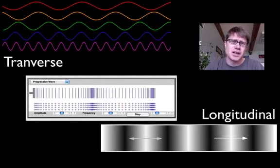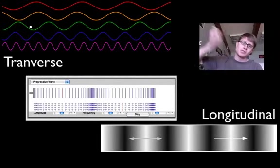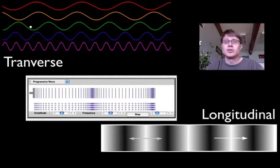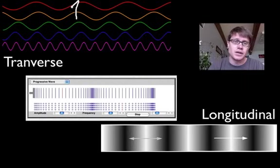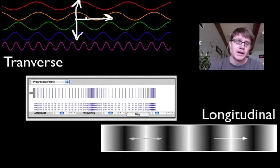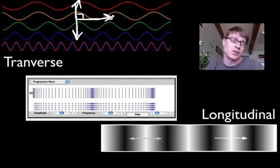First of all, you should understand that waves come in two different flavors. There's transverse waves and longitudinal waves. Transverse waves, an example of that, if you were to tie a string to a tree and then just move the string up and down, you'd be creating a transverse wave. The string would be moving up and down, but the wave would actually be traveling perpendicular to that. And since this is perpendicular motion, we call that transverse wave. This does kind of look like a T on its side, so that's a good way to remember what a transverse wave is.